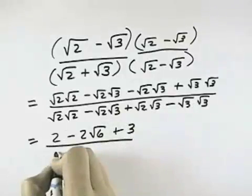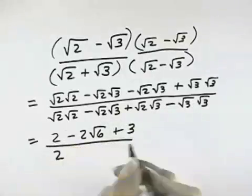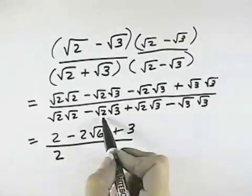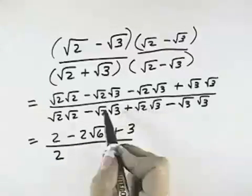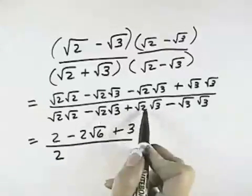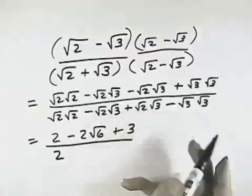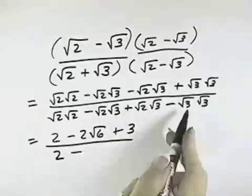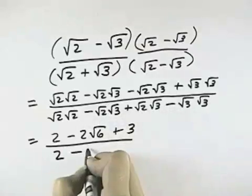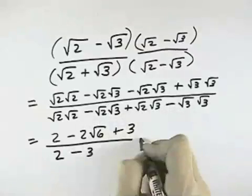The denominator: I've got 2, and then a minus square root of 6 and a plus square root of 6, so those two cancel each other out, and then a minus 3, because the square root of 3 times square root of 3 is 3.